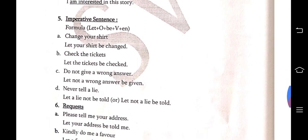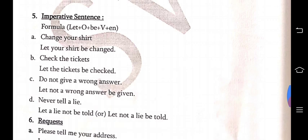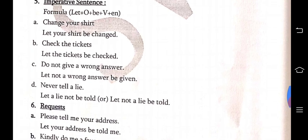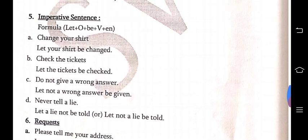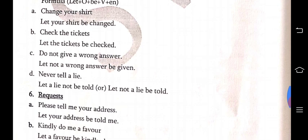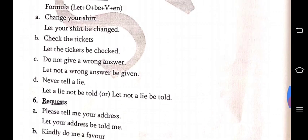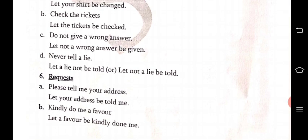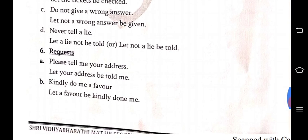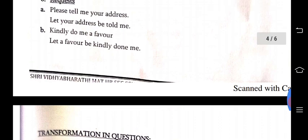Imperative sentences are very very important. The formula is: Let + object + be + verb + EN. Examples: 'Change your shirt' → 'Let your shirt be changed.' 'Check the tickets' → 'Let the tickets be checked.' 'Do not give a wrong answer' → 'Let not a wrong answer be given.' 'Never tell a lie' → 'Let a lie not be told' or 'Let not a lie be told' — both answers are correct. For requests: 'Please tell me your address' → 'Let your address be told me.' 'Kindly do me a favor' → 'Let a favor be kindly done for me.'